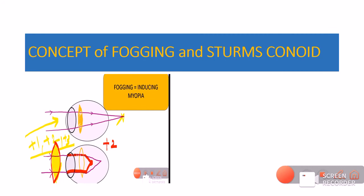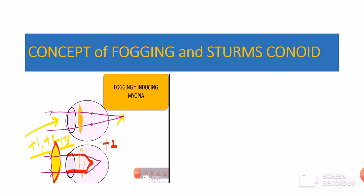The fifth and last concept is fogging and Sturm's conoid, which you should be very thorough with to understand the astigmatic dial. If you are still not clear with the concept of fogging and Sturm's conoid, I would suggest you visit my videos on those topics.